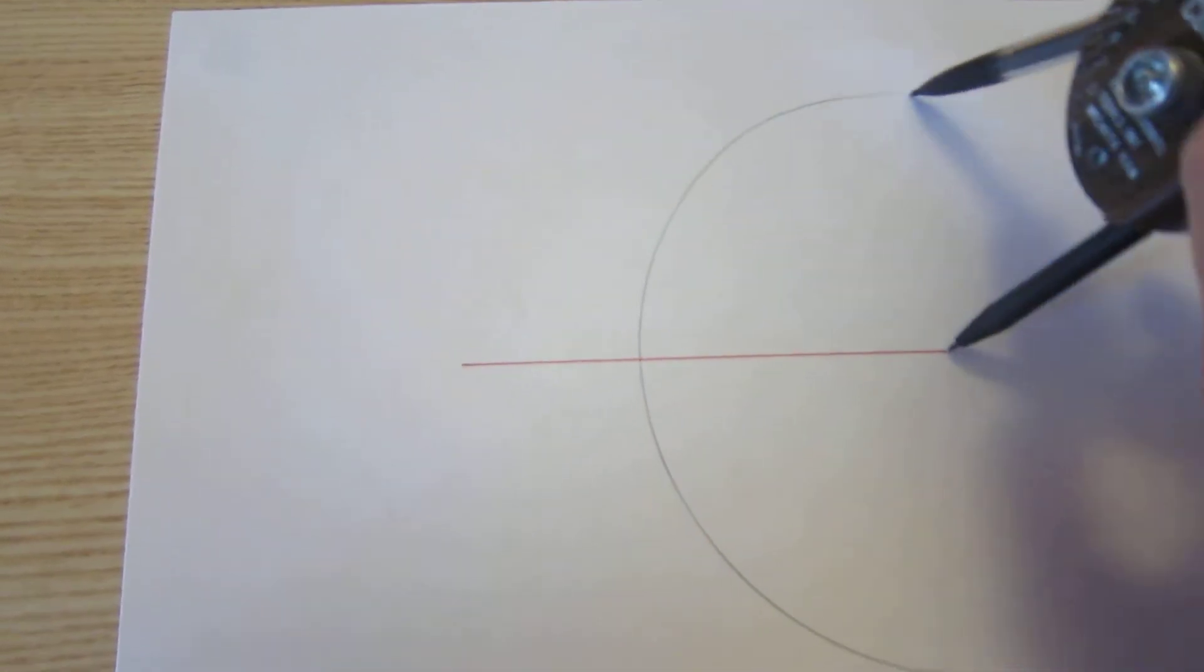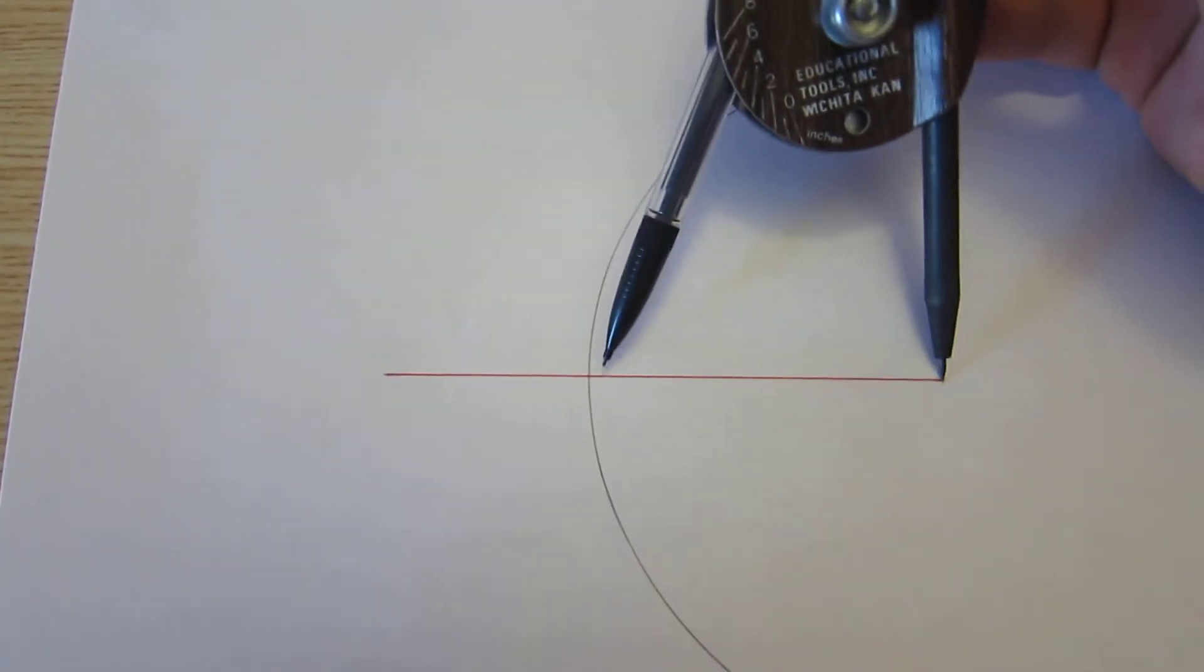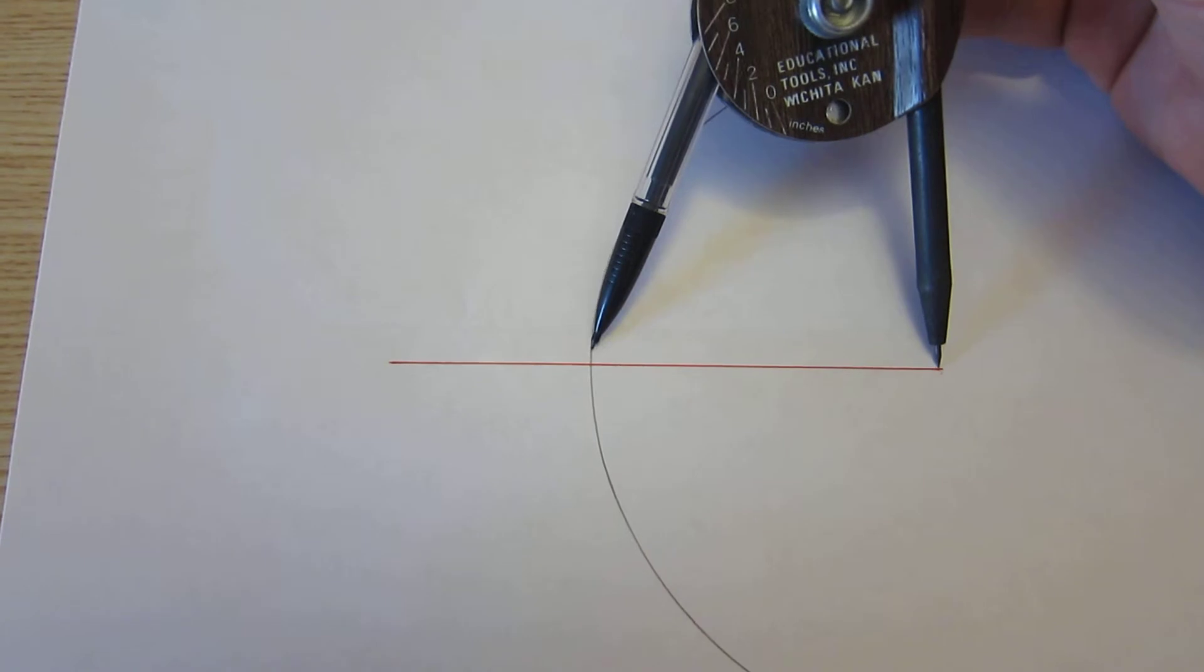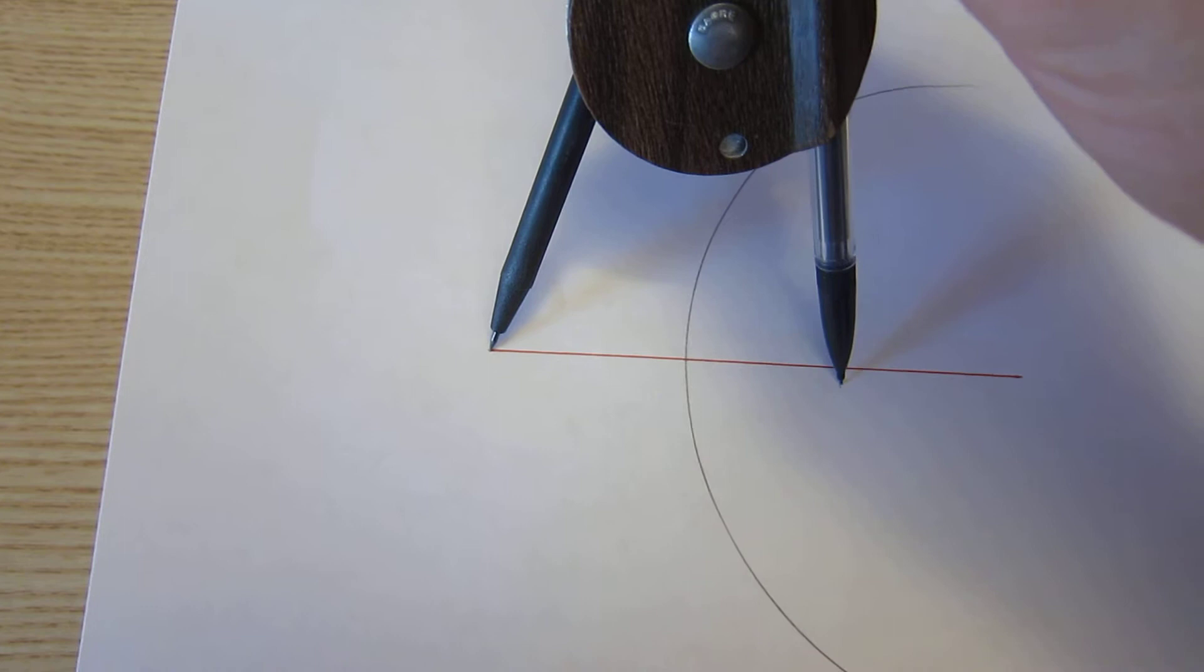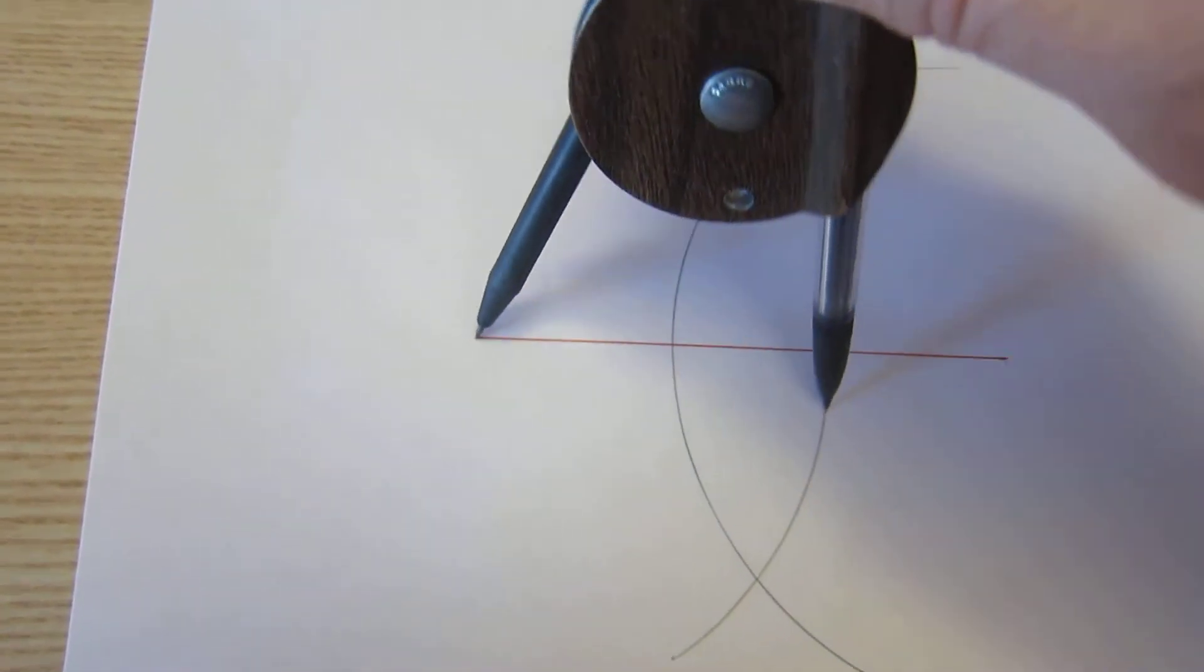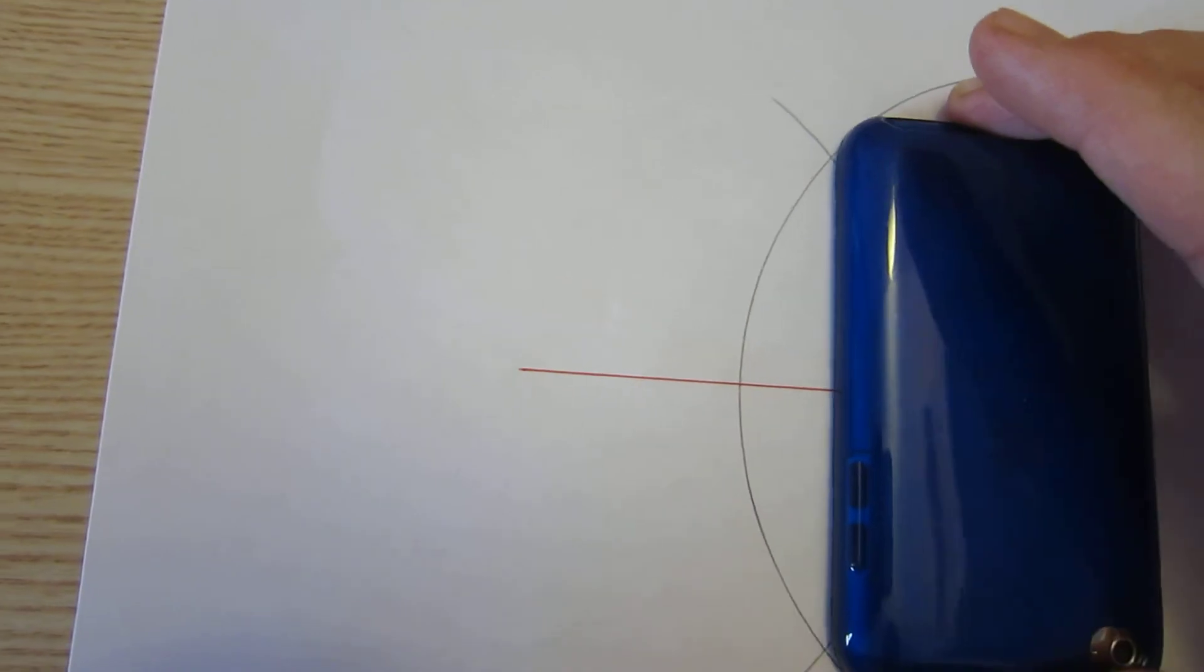Create a half circle, and then without changing the size of the compass, flip it and do the exact same thing from the left side. Draw your half circle. Once those lines cross, what you've created are kind of like X's that mark the spot.